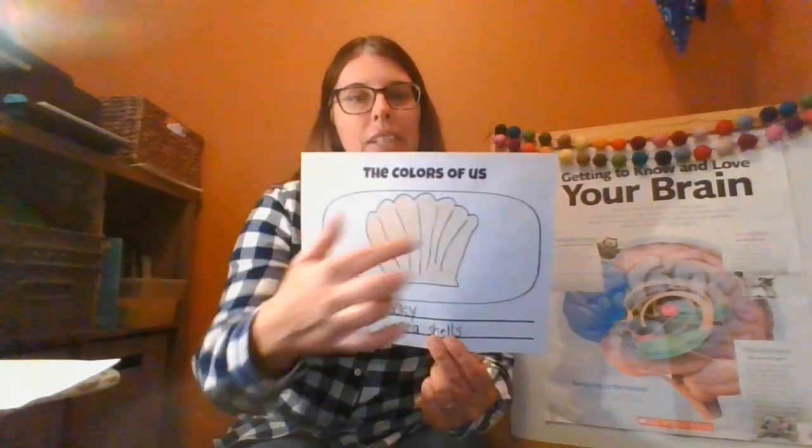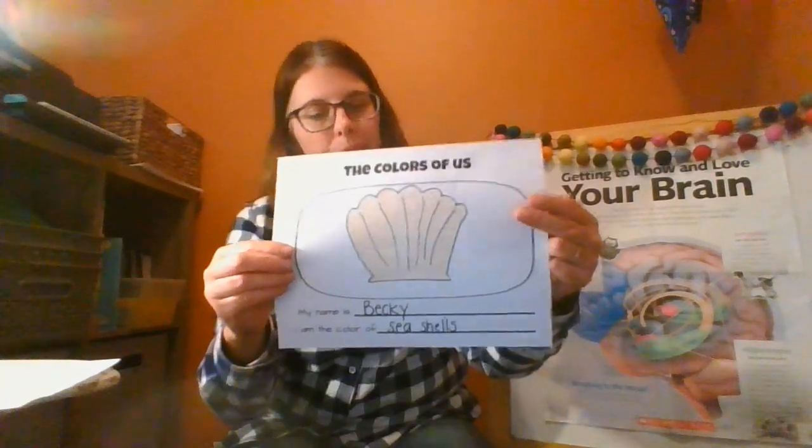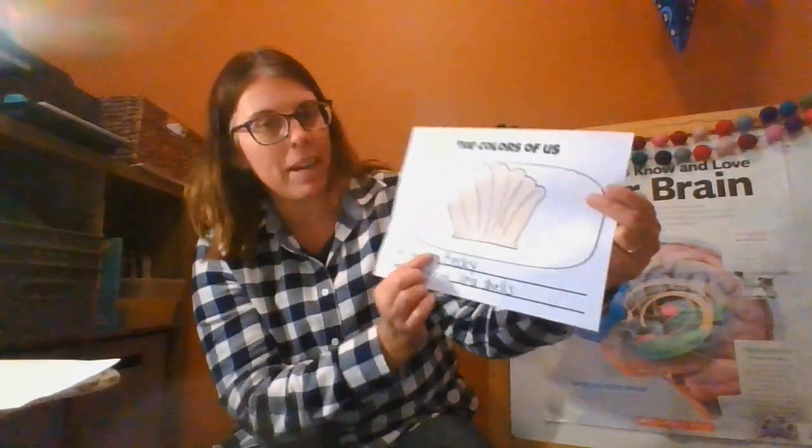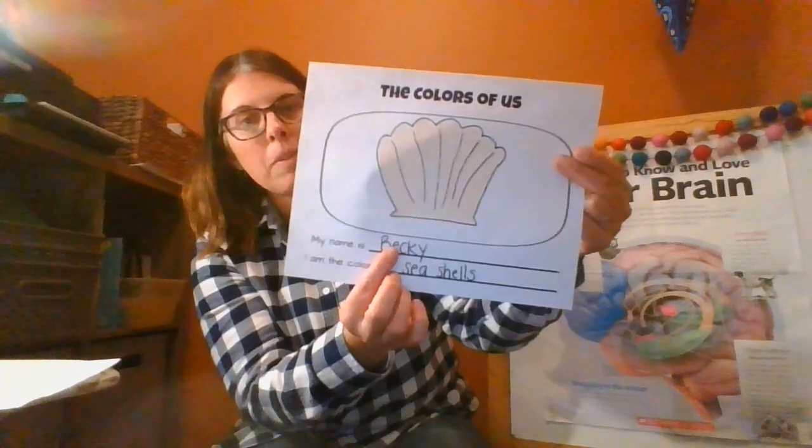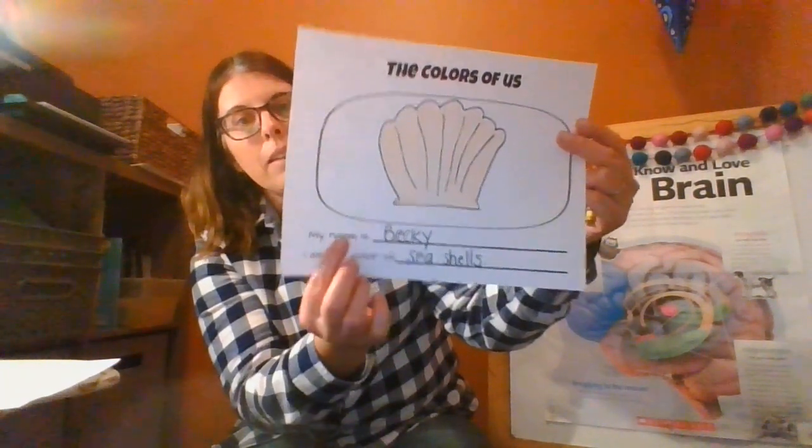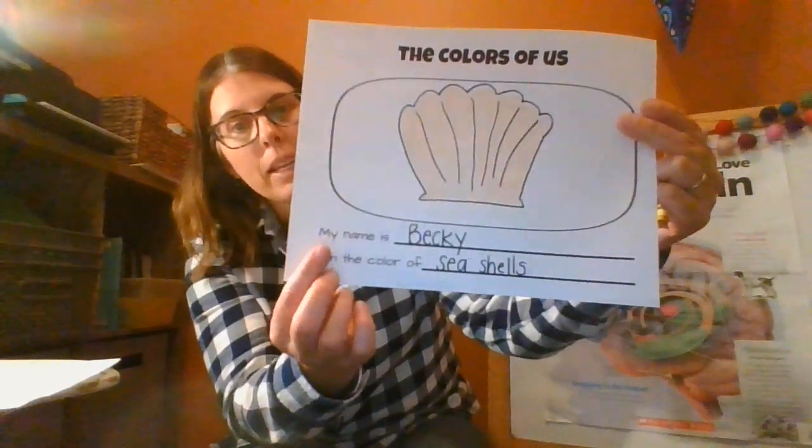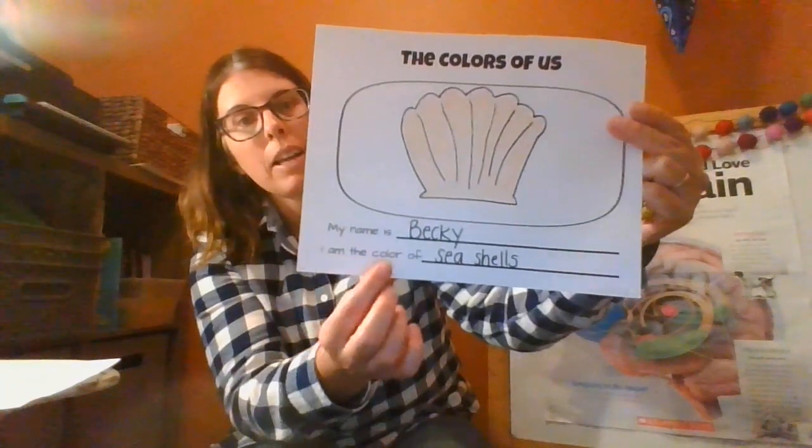So we're going to do a project where we get to think about ourselves and what we're the color of. So I made an example to show you. This up at the top says the colors of us, just like the name of the book we read. And then there's some words here and it says my name is, can you write your name on this line? So I wrote Becky, my name is Becky. And then it says, I am the color of.